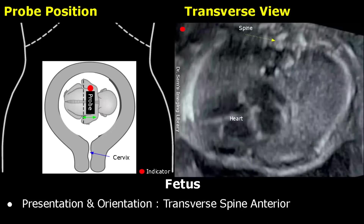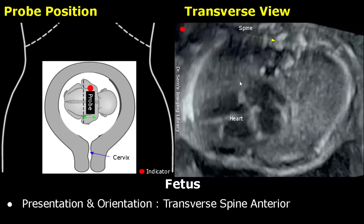This is another transverse presentation in which the fetal head is towards the left side and facing the posterior aspect of the uterus. So when we move the probe to the left, we will find the fetal head. When we move from left to the right, we will find the heart — this will be the image formed. If we move more to the right, the stomach will also be seen at this side.